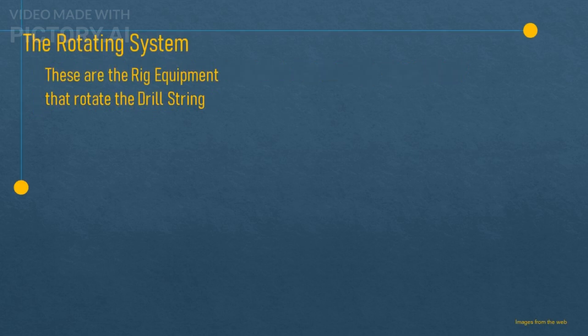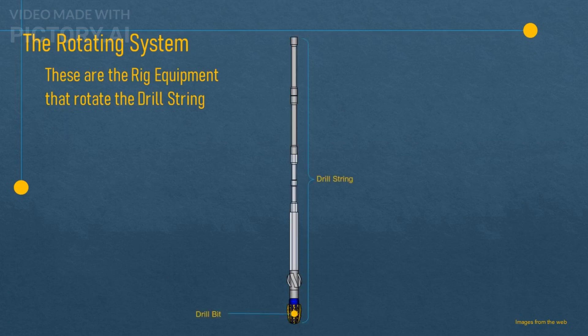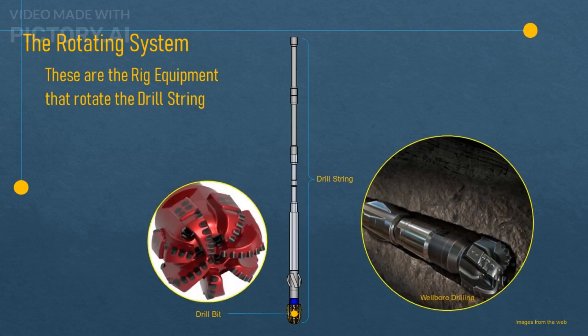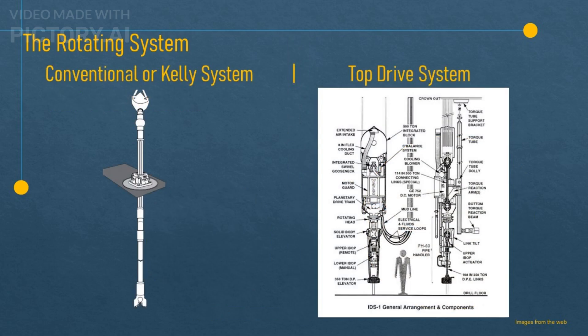The rotating system is the part of the drilling rig that provides the mechanism to rotate the drill string and break up the rock formation. The drill string is the assembly of pipes that connects the drill bit at the bottom to the surface equipment. The drill bit is the tool that cuts through the rock and creates the wellbore. The rotating system has two types: the conventional or Kelly system, and the top drive system.